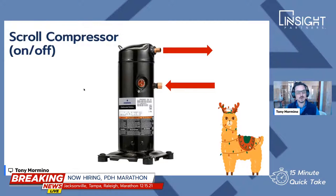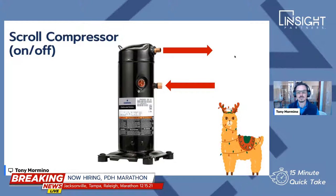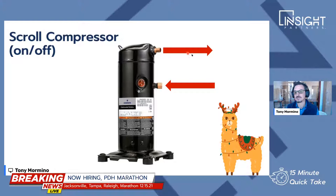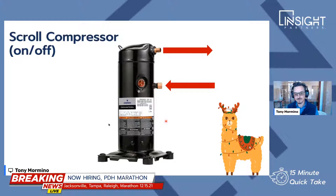Before we talk about the newer technology — the variable capacity compressor and variable speed compressor — let's just talk about a regular scroll compressor, by far the most common compressor found in the industry. This bottom arrow represents the suction gas coming into the compressor. The gas goes through the two scrolls, adds temperature and pressure, and comes out the top as the hot discharge gas, which goes off to your condensing unit and rejects heat to the atmosphere. The motor is located down in this lower area.